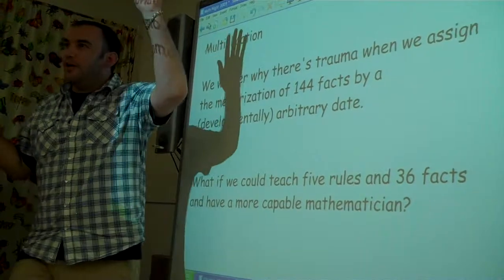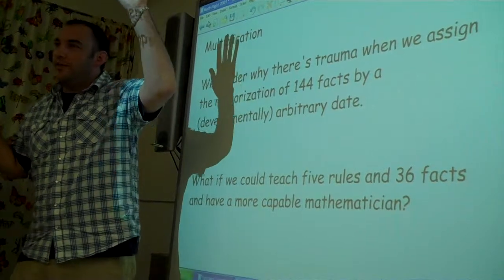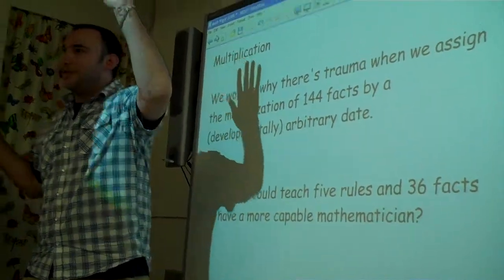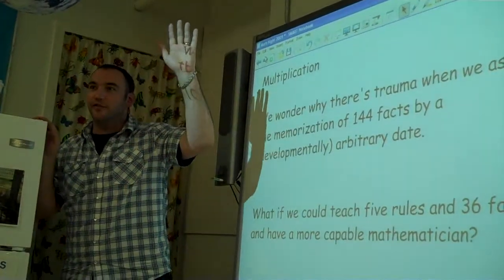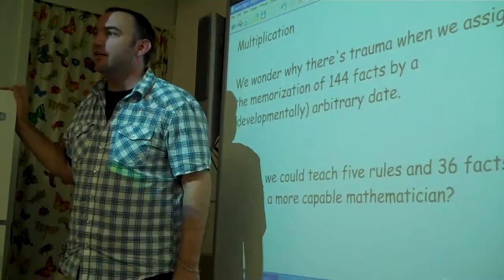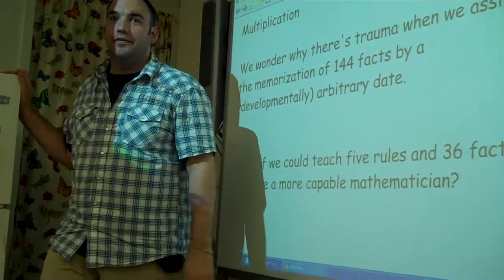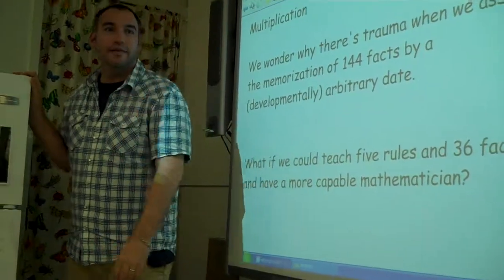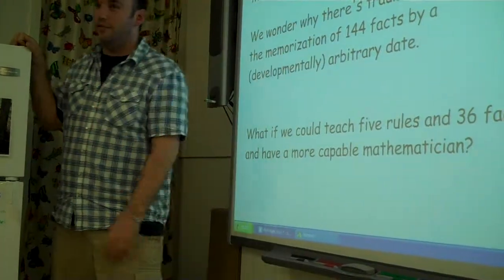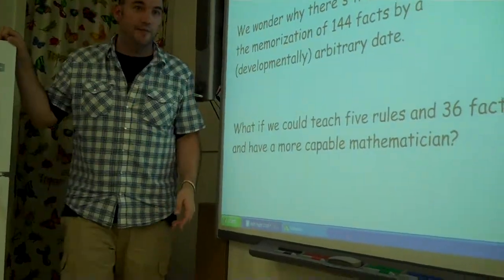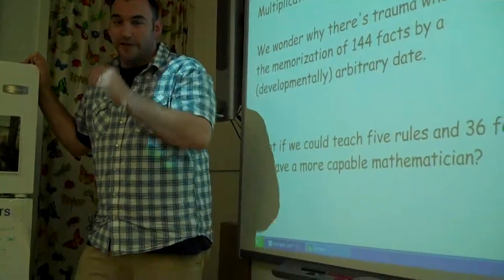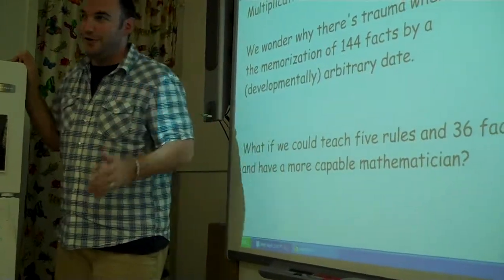How many people memorized the times tables when they were young? 144 facts, a 12 by 12 grid. Any ideas why to 12 and not to another number? A foot — maybe 12 inches in a foot. That might explain why we're one of the only people who memorize it to 12, because we're one of the only people who use feet.